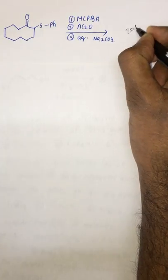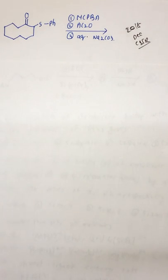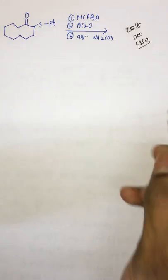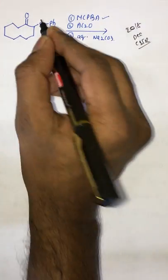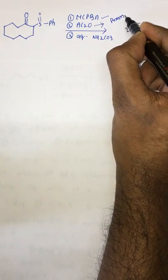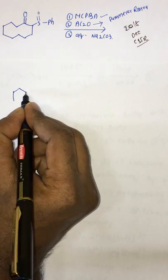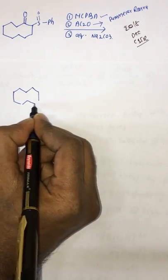Today we are going to solve some of the questions asked in the 2018 December CSE exam. The first question is very simple. The first step is called MCPPA oxidation, where sulfur is converted into a sulfoxide type. The second step is called Pummerer rearrangement. Now we will see the mechanism for this reaction and the product.